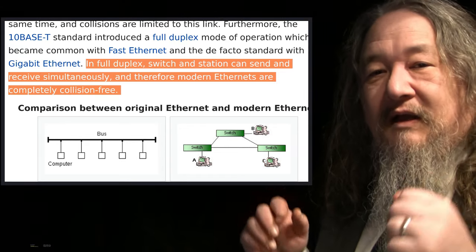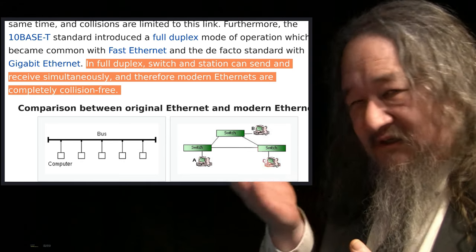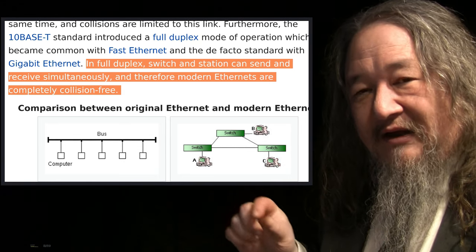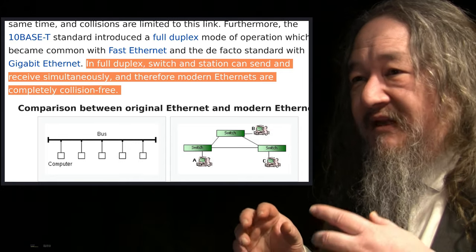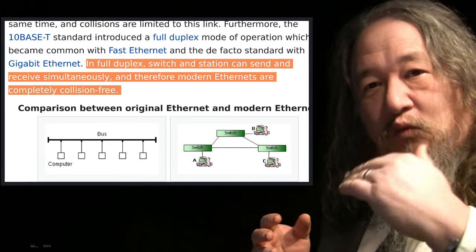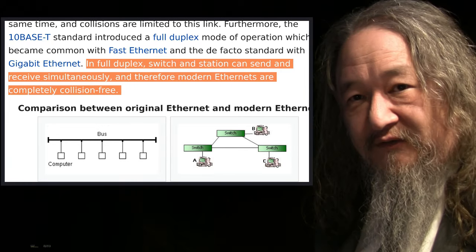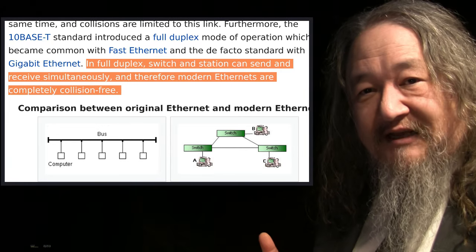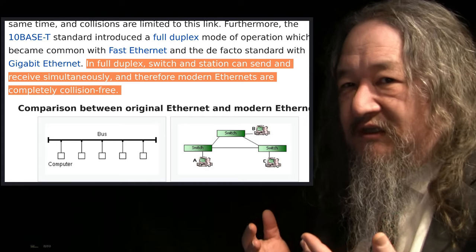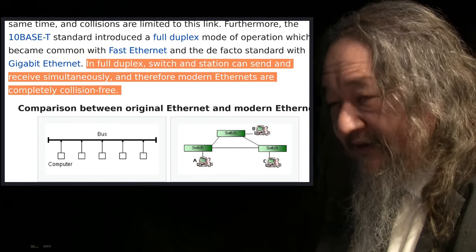That doesn't mean everything is wonderful, because there's still only so much data you can push through a wire. The arbitrage between which packets get to travel between switches still has to be sorted out and things may have to wait. So there are no collisions, but that doesn't mean everything flows perfectly.